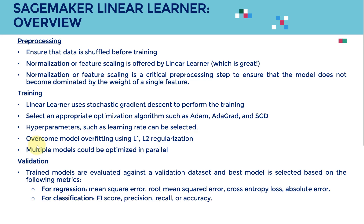When we train the model, we want to make sure it does not overfit the training data. That's why we can use two types of regularization: L1 regularization and L2 regularization, which we'll cover in detail later. Linear Learner can also train multiple models and optimize them in parallel.